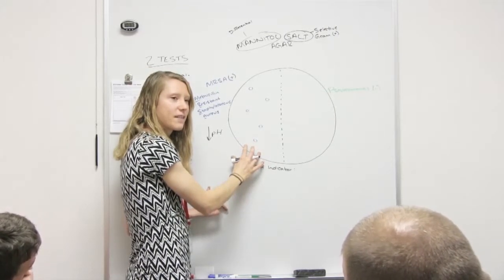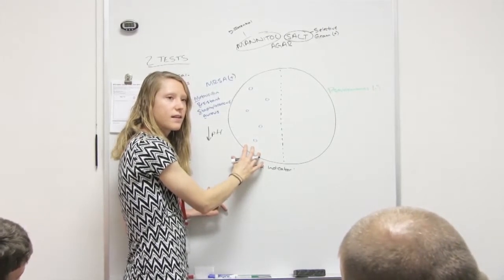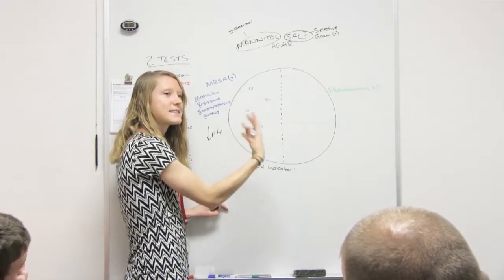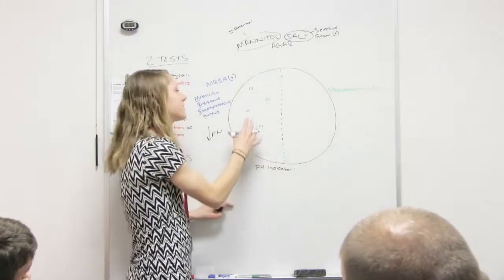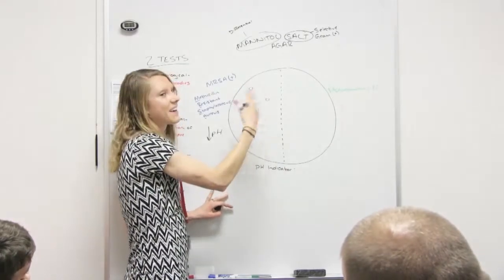Now the pH indicator, when it sees the plate get more acidic, what color does it change the plate to? Yellow. Yellow. So is this side of the plate becoming more acidic? Yes. Why? Because it's creating acid.